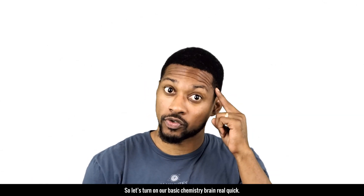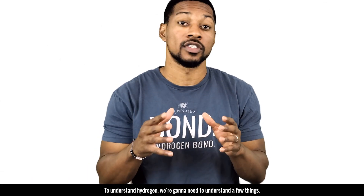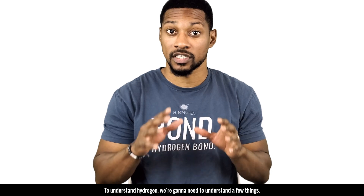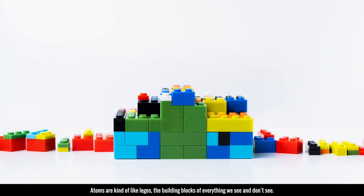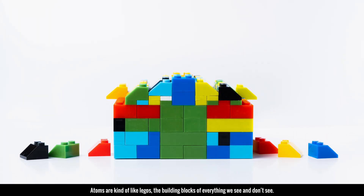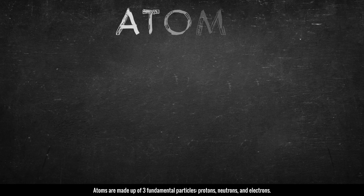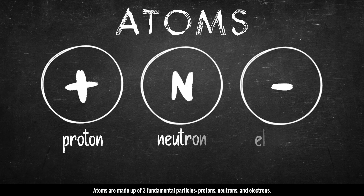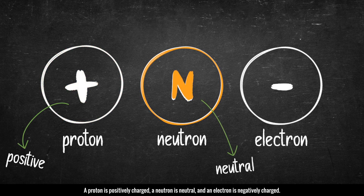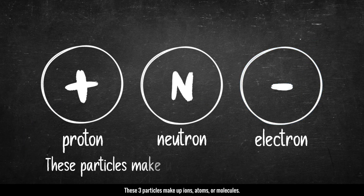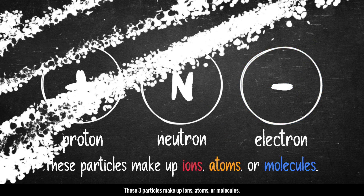So let's turn on our basic chemistry brain real quick. To understand hydrogen, we're going to need to understand a few things. First, we have to understand atoms. Atoms are kind of like Legos — they are the building blocks of everything we see and don't see. Atoms are made up of three fundamental particles: protons, neutrons, and electrons. A proton is positively charged, a neutron is neutral, and an electron is negatively charged. These three particles make up ions, atoms, or molecules.